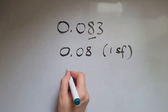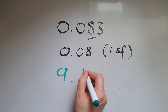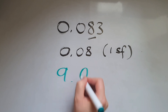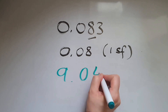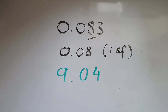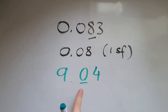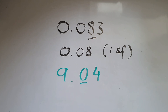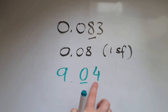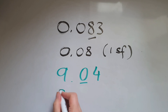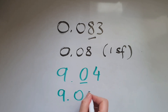If we have 9.04 and we need to round to two significant figures, that means we're going to round the 0 here. Do we round it down or round it up? Looking at the 4 means we round down. So we're going to go to 9.0.